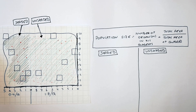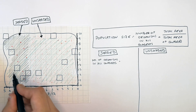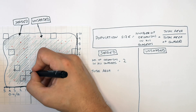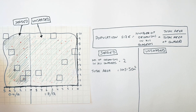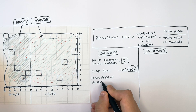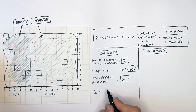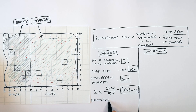For the shaded region, the total number of organisms in all quadrats is 2. The total area of shaded grass is 10 m × 5 m = 50 m². Each quadrat is 1 m × 1 m, and with 5 quadrats the total area of quadrats is 5 m². So: 2 × 50 ÷ 5 = an estimated population size of 20 flowers.